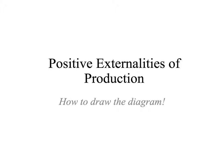Hey, hey everybody. Today we're going to take a quick look at the positive externalities of production graph — just the diagram. This is part of market failure. It's one of the four externality forms of market failure: the positive externalities of production.